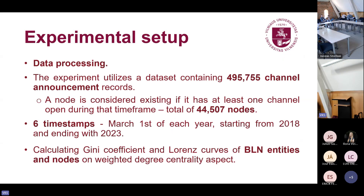Moving to our experimental setup, the first step was data processing, which I will detail on the next slide. The dataset used for the calculation contains almost 500,000 channel announcement records and 45,500 nodes. A node is considered existing if at least one of its channels is open. We chose to analyze the Lightning Network within six timestamps, starting with March 2018 when the Lightning Network was first introduced and ending with 2023. Lastly, we calculated the Gini coefficient and Lorenz curve of Lightning Network entities and nodes.